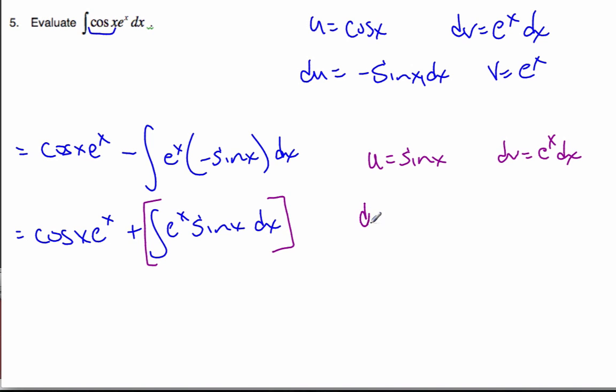And so I take the derivative of sine x, which is cosine x. I take the integral here, which is e to the x. And I'm going to go and substitute that in.